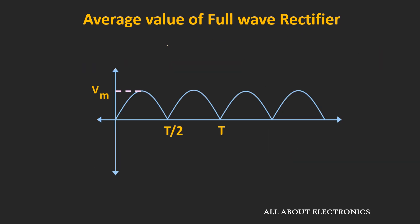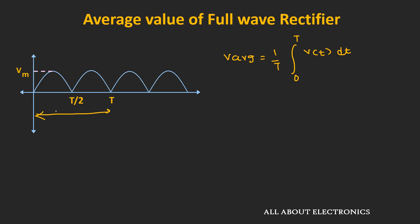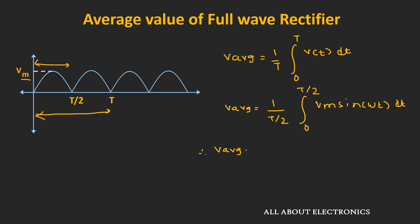Similarly, let's find out the average value for the full-wave rectifier circuit. In the full-wave rectifier, the signal repeats itself after every T/2 time period, where T is the time period of the input signal. So instead of integrating over the entire time period T, we can integrate it only for the T/2 time period. The expression for the average value becomes V_average = (1/(T/2)) × integral from 0 to T/2 of Vm·sin(ωt) dt, which equals (2/T) × integral from 0 to T/2 of Vm·sin(ωt) dt.